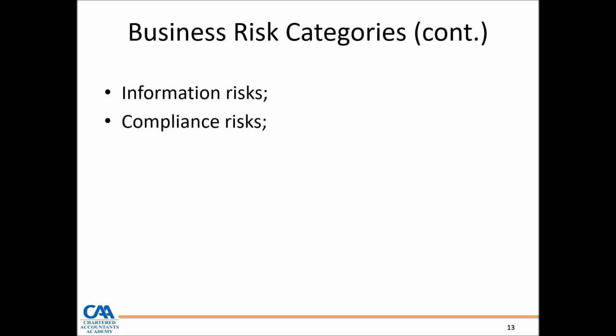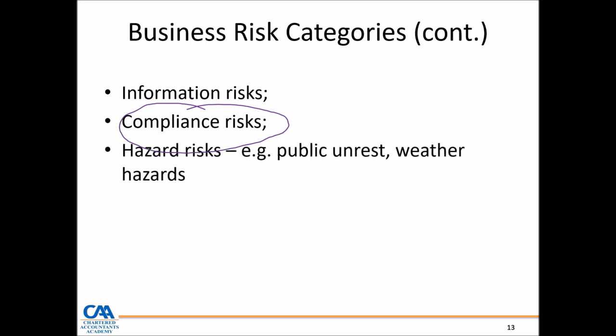There are other types of business risk. Information risks: lack of available information to meet the needs of the business. Compliance risk: every business is affected by some form of law and regulation, and there is a risk we might fail to comply. Hazard risks can be weather hazards, public or civil unrest, or strikes resulting in destruction of property — if we are located in an area prone to civil unrest, we are exposed to hazard risks. Reporting risks: we can fail to comply with financial reporting standards.